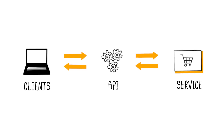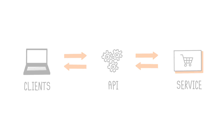An API is a programming interface that allows access to a service, such as data or functionalities, provided by a third-party system. In this case, it is said that the third-party system exposes an API. If you want to learn more, I recommend checking out my dedicated video on APIs.